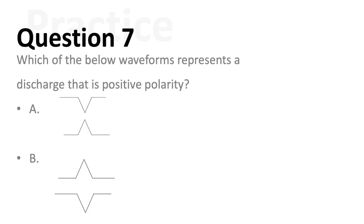Question seven. Which of the below waveforms represents a discharge that is positive polarity? A or B? I'll give you three seconds. If you answered B, you would be correct. Remember that the positive polarity can be represented by a plus sign fitting in between the two waveforms which go apart from one another.